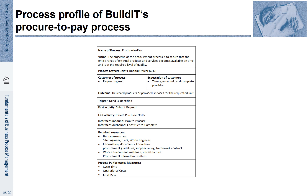The process profile describes the procure-to-pay process and its various characteristics. The process is associated with a vision — here it is the objective of the procurement process to secure that the entire range of external products and services become available on time and at the required level of quality. A process owner is defined, here the financial officer. There are customers of the process defined and their expectations — it is a requesting unit that expects a timely, economic and complete provision.